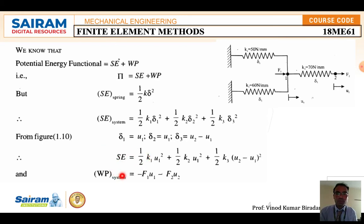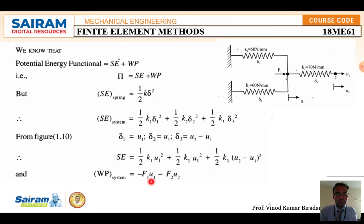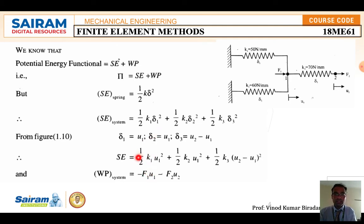Now calculate the work potential of the system. Two external forces are acting: F1 at node 1 and F2 at node 2. Since the force acting on the system is positive and work done by the system is negative, the work potential is: minus F1·u1 minus F2·u2, so work potential = −(F1·u1 + F2·u2).